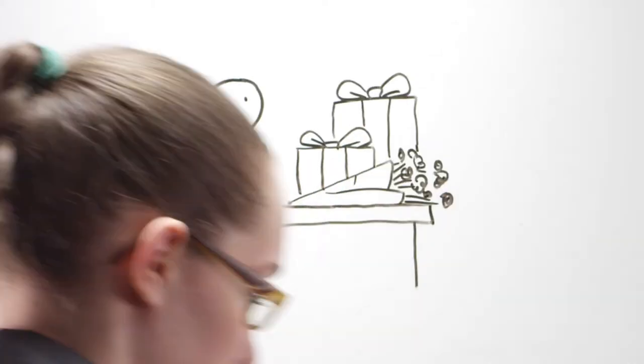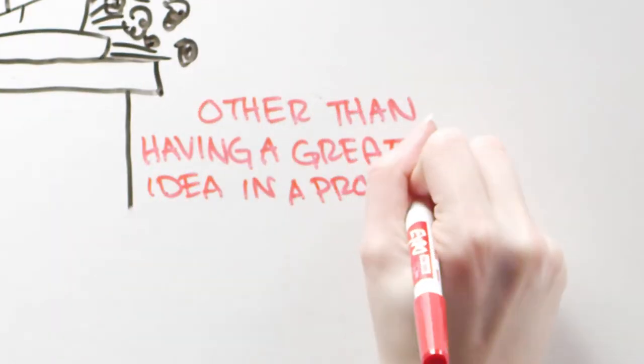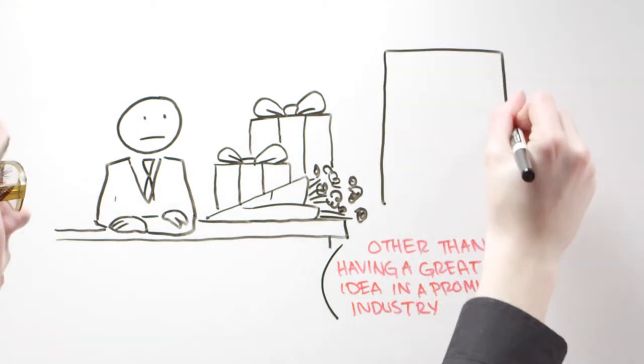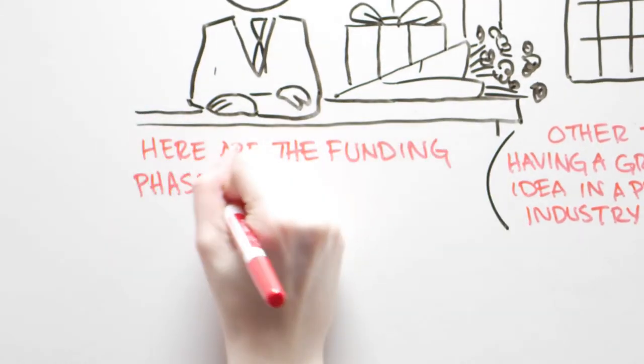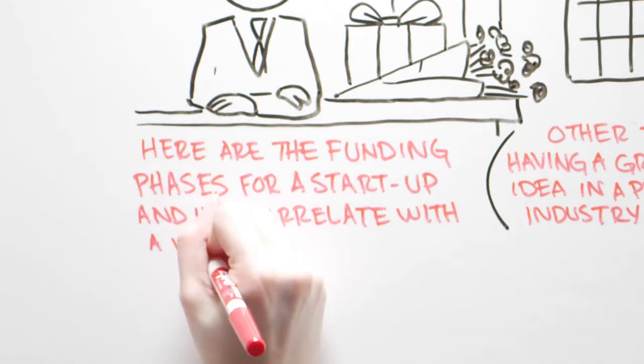The key to wooing venture capitalists, other than having a great idea in a promising industry, is to ask for money at the right time in a VC's life cycle. Here are the funding phases for a startup and how they correlate with a VC's life cycle.